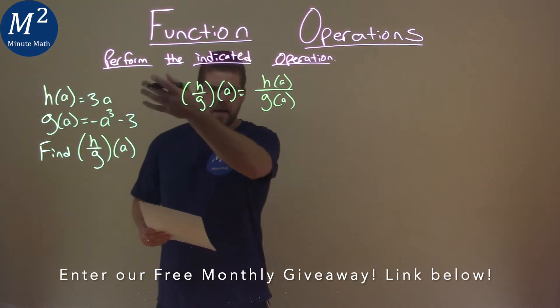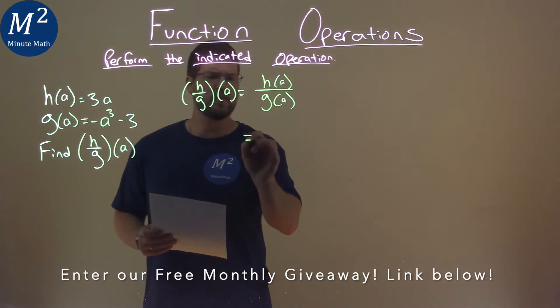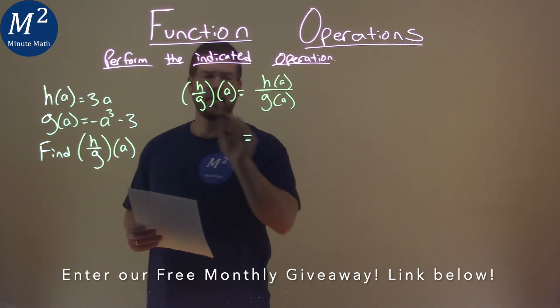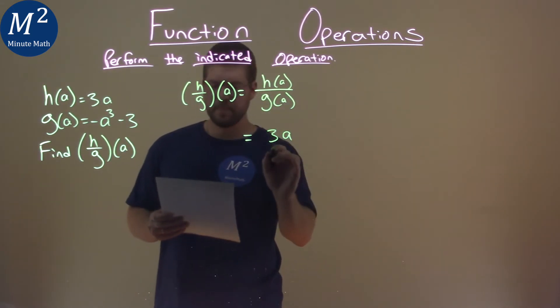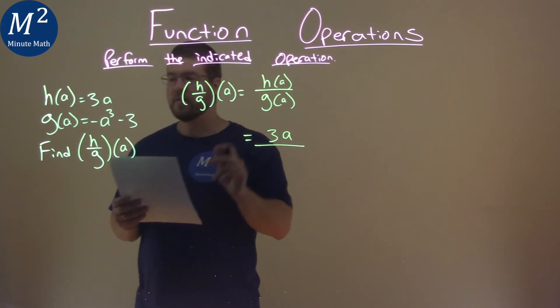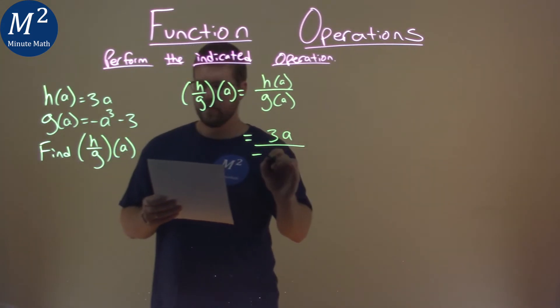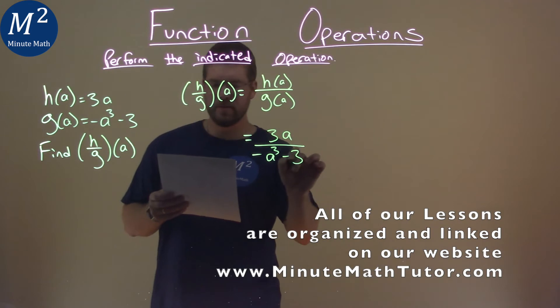Well, we're given h of a and g of a, so let's substitute that in. H of a is just, well, 3a. g of a, right here, is negative a to the third minus 3.